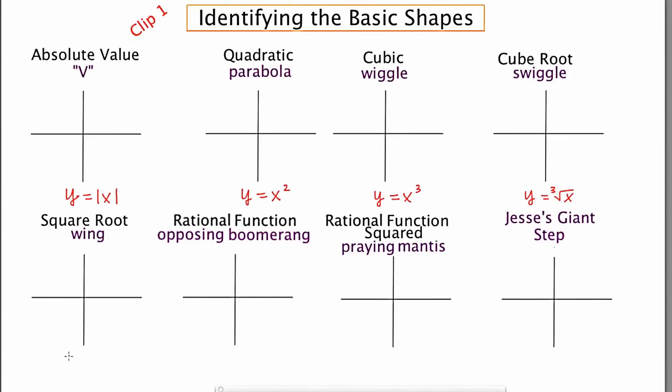The fifth one is just the square root function, y equals square root x. The next one is just your basic rational function, y equals 1 over x.